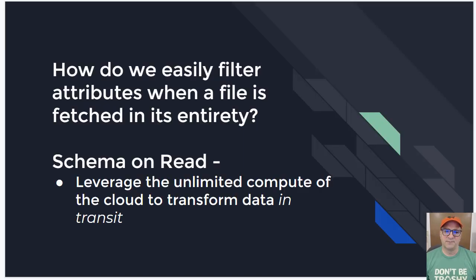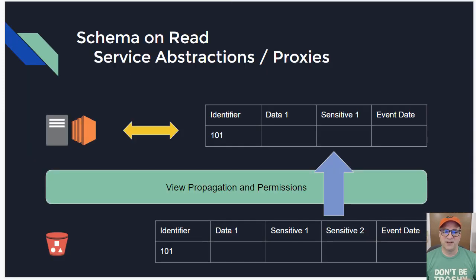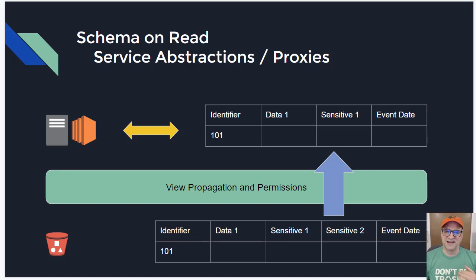Let's start with schema on read. How do we easily filter attributes when a file is fetched in its entirety? There are really two approaches — schema on read and schema on write — each with subcategories. For schema on read, we leverage the unlimited compute of the cloud to transform the data in transit. We build a view propagation or permissions filtering tier, so data is actually filtered and removed as it's propagated up to a given set of users.